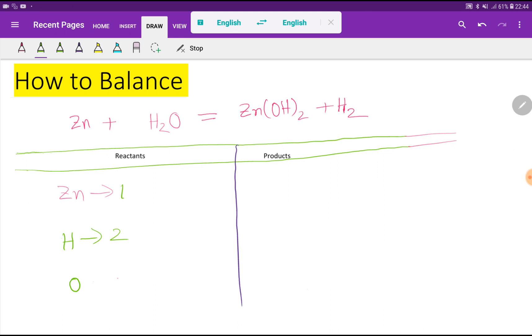On the right-hand side, we have one zinc atom. These twos are called subscripts. This subscript applies to all of the parenthesis. In the parenthesis, we have oxygen and hydrogen, so these twos apply to both oxygen and hydrogen.